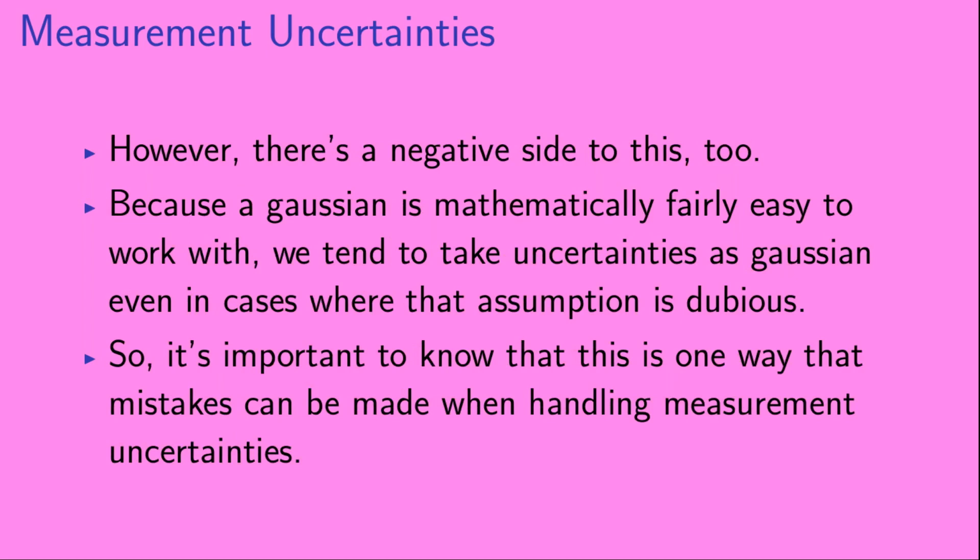However, there is a negative side to this, too. Because a Gaussian is mathematically fairly easy to work with, we tend to take uncertainties as Gaussian, even in cases where that assumption is dubious. So, it's important to know that this is one way that mistakes can be made when handling measurement uncertainties.